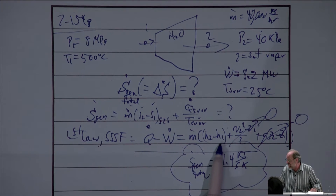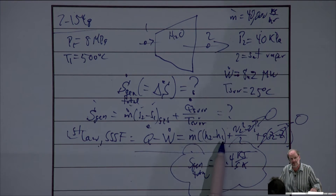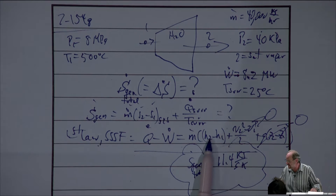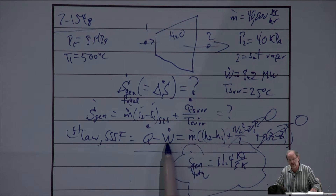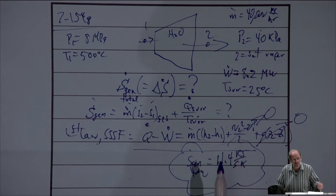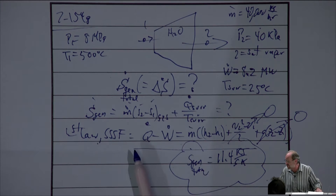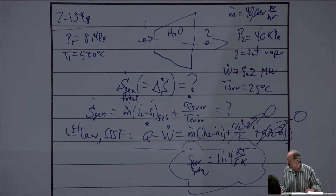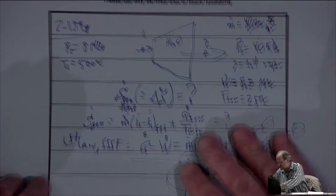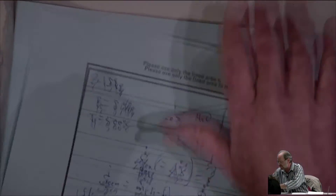We find the entropy change of the system simply by knowing what the inlet and exit states are. Entropy, after all, is a property. So I'm given both the inlet and exit state and can very easily find the entropy needed. We're given the mass flow rate, and we'll assume there's no changes in potential or kinetic energy. So basically, rate of heat transfer minus the power equals the mass flow rate times the change in enthalpy. This is what we'll have to solve first.